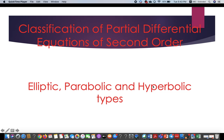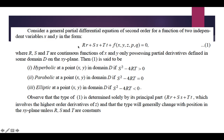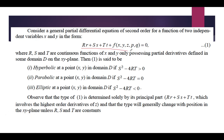In this lecture, we are going to study classification of partial differential equations of second order. The equations will be classified as elliptic, parabolic, and hyperbolic. The general form of the equation is given, where capital R is the coefficient of small r, capital S is the coefficient of small s, and capital T is the coefficient of small t. The discriminant S² minus 4RT decides the nature: if greater than 0, it is hyperbolic; if equal to 0, it is parabolic; and if less than 0, it is elliptic.